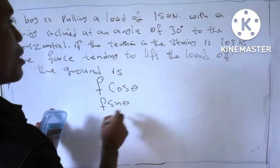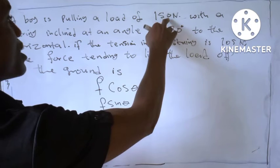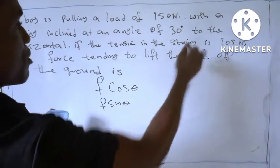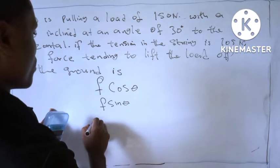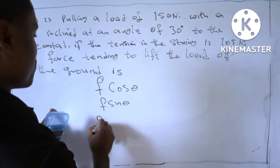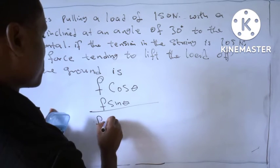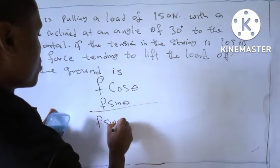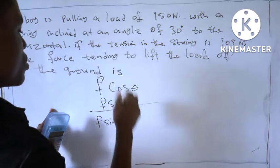So here, the force is 105. So we are using F sine theta because it's trying to lift the load off the ground.